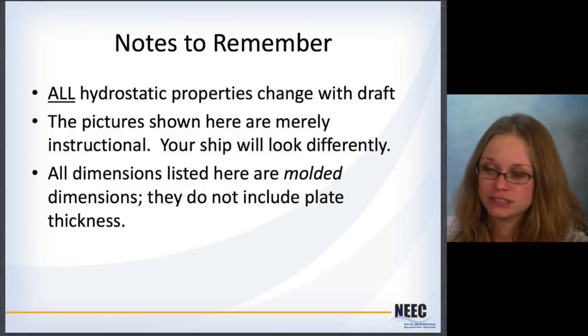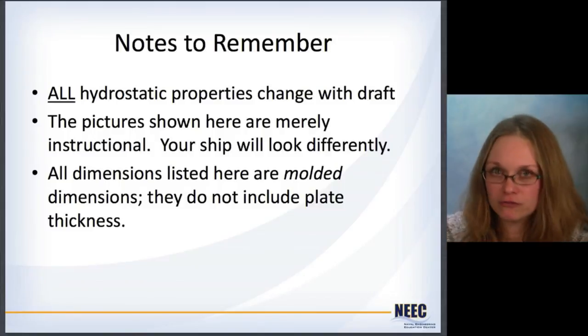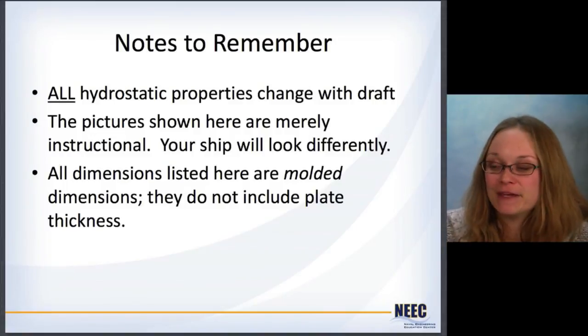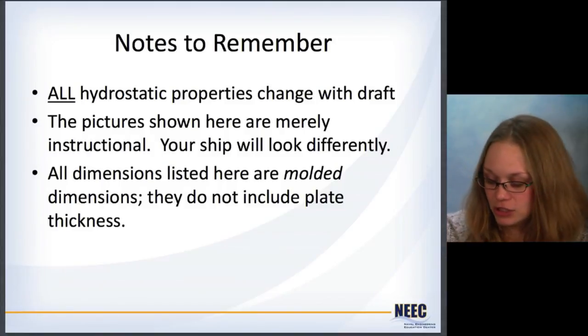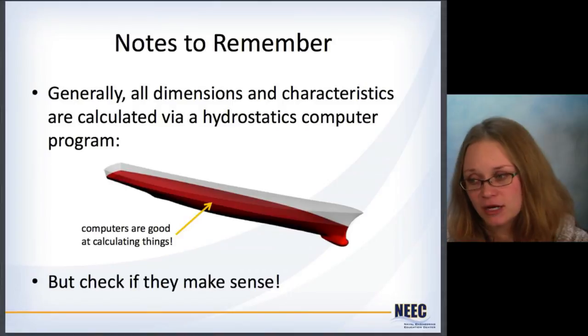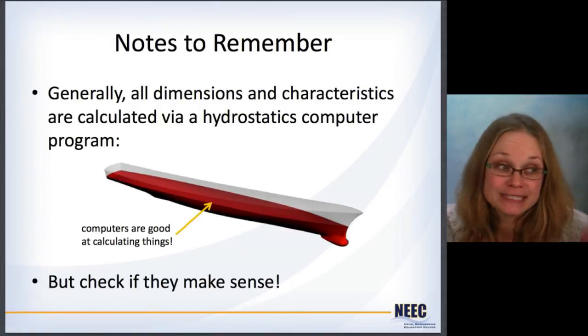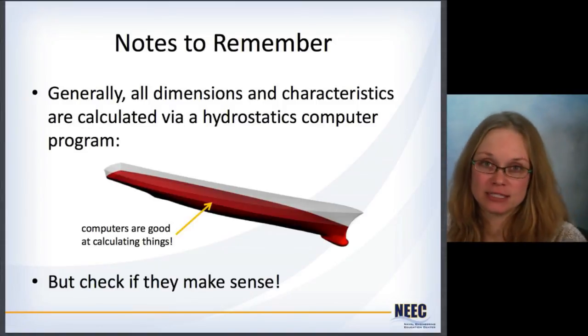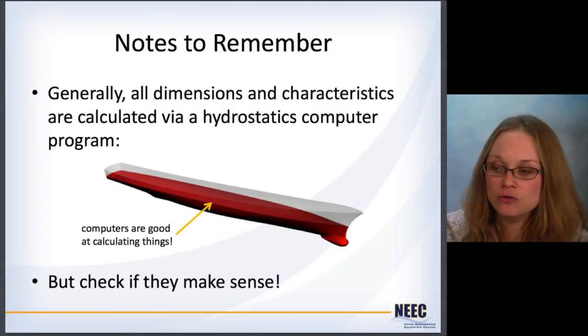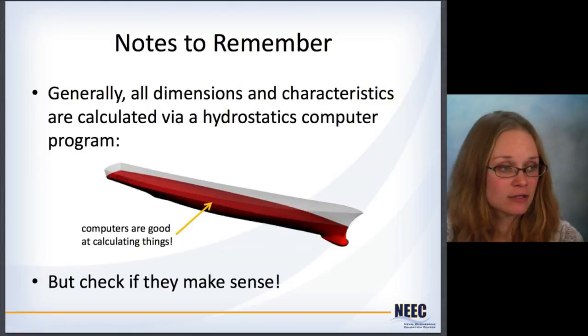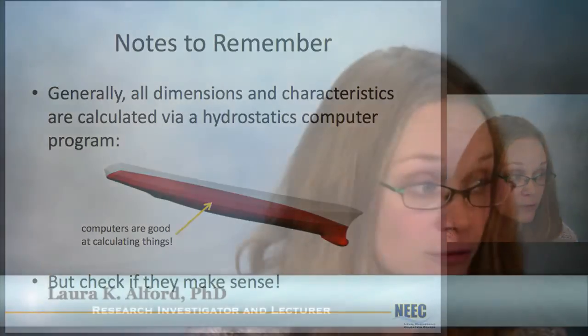Some notes to remember: all of the characteristics we've talked about will change with draft, just as with the sectional area curve. The dimensions shown are molded dimensions — from the very outside of the ship to the other outside — and they don't include plate thickness. Generally, all these dimensions and characteristics will be calculated for you on the computer, but you have to go back and make sure the results make sense, such as checking that the block coefficient, prismatic coefficient, and midship section coefficient all agree. This has been a quick introduction to ship geometry. We'll continue on with hydrostatics, getting into stability, damage stability, and lots more. Thank you very much for watching and we'll see you next time!